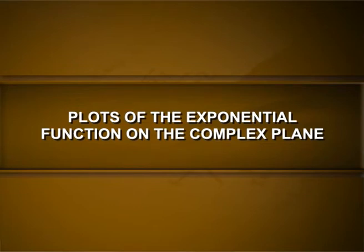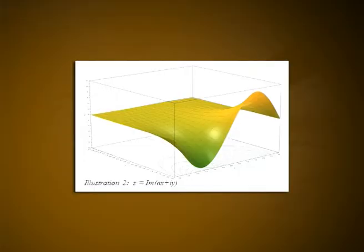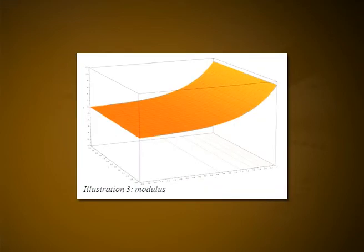Plots of the exponential function on the complex plane: the exponential function maps any line in the complex plane to a logarithmic spiral in the complex plane with the center at the origin. Two special cases: when the original line is parallel to the real axis, the resulting spiral never closes on itself; when the line is parallel to the imaginary axis, the resulting spiral is a circle of some radius.